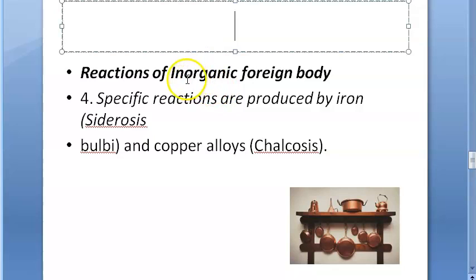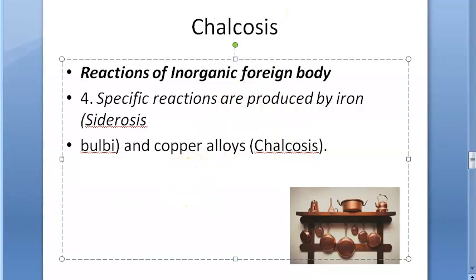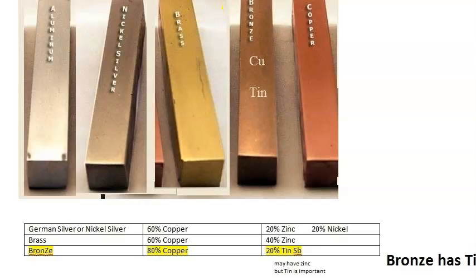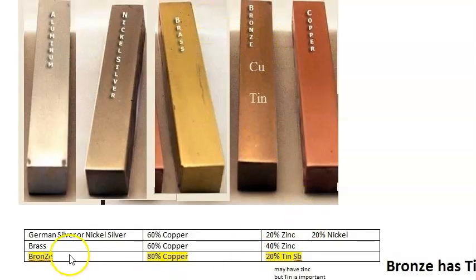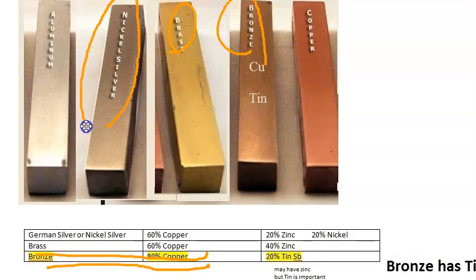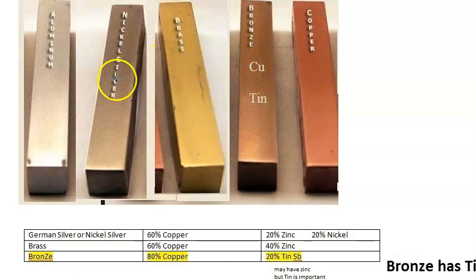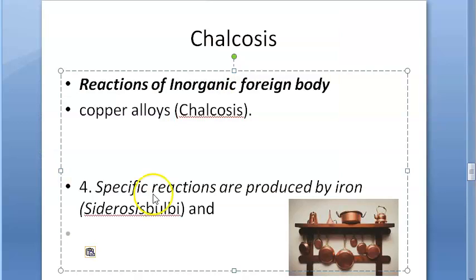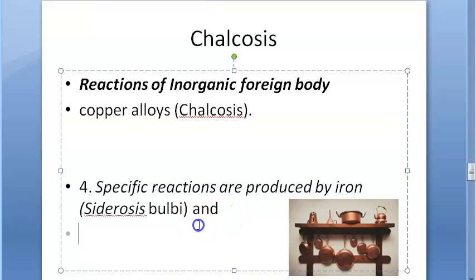This is a reaction to an inorganic foreign body. Looking at alloys of copper: bronze has 80% copper, brass has 60% copper, and German silver (nickel silver) also contains copper. These three are the alloys of copper to be concerned about. Pure copper causes a violent reaction but that is not chalcosis. Chalcosis is caused by copper alloys. If it is caused by iron, it is called siderosis bulbi.